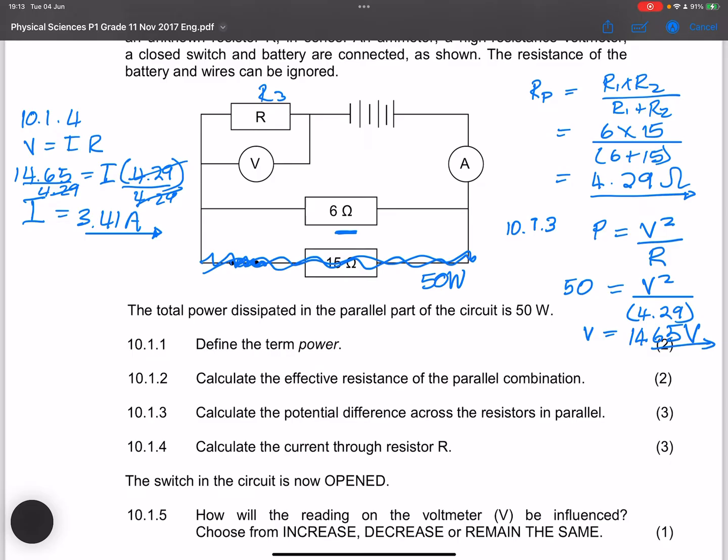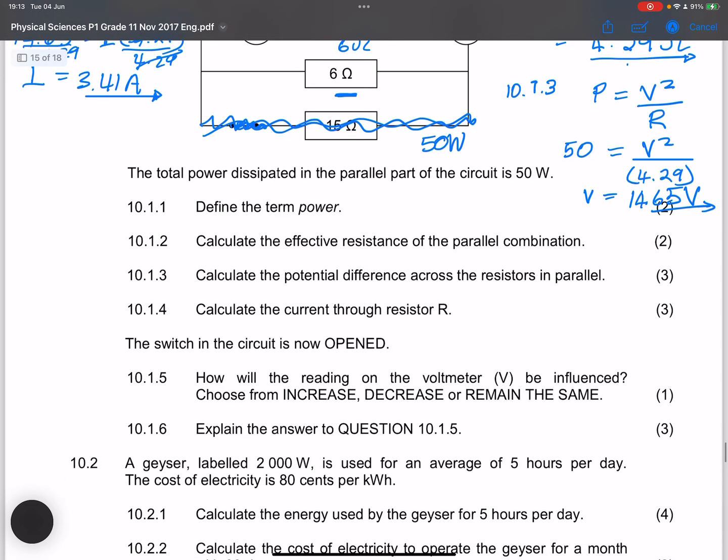Now, note in this case, so if I increase the resistance, remember the effective resistance was 4.29, but now it will be 6 ohms. And so I've increased the resistance of the circuit. What happens to the current? The current will decrease, and that means a lesser current passes through this resistor, and so voltmeter V should decrease. So our answer there is it will decrease. And they want us to explain that.